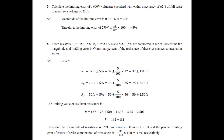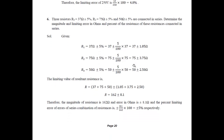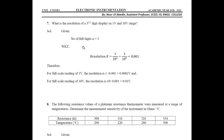Next problem: three resistors R1 = 37 ohms ± 5%, R2, and R3 are connected in series. Determine the magnitude and limiting error in ohms and percent of the series combination. Taking the percentage values: R1 is 37 ± 1.85 ohms, and similarly for R2 and R3. Total resistance is 162 ohms. Error in ohms is 8.1 ohms. Percentage limiting error is 8.1 divided by 162 into 100, which equals 5 percent.